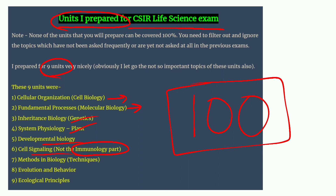I have done methods and techniques. I have done evolution and ecology. Now we will discuss why I did plant physiology instead of animal physiology, and why I skipped immunology.